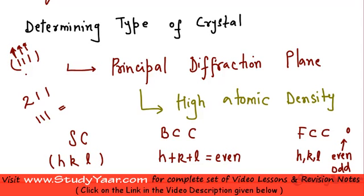Similarly your 2 0 2 would be a principal diffraction plane for an FCC lattice because this is even, 0 is even and this also is even. So all 3 numbers should be either all even or all odd.